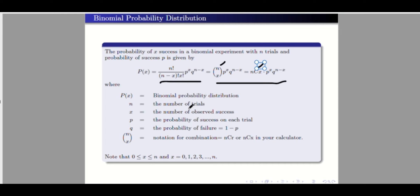x is the number of observed successes — so x must be in line with success. q is the probability of failure, which can be computed as one minus p. The probability of success p can also be computed as one minus q. Note that x starts from zero and is bounded above by n.